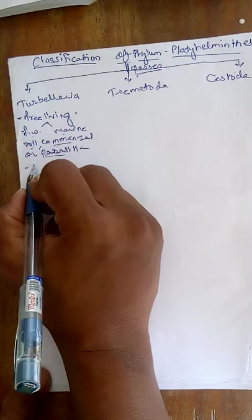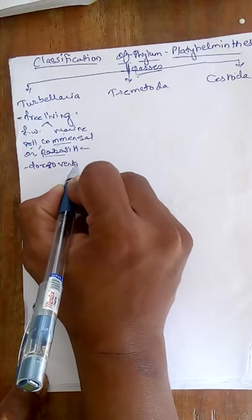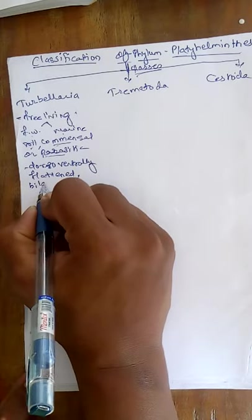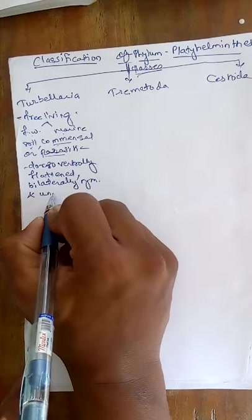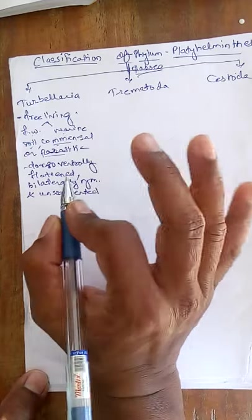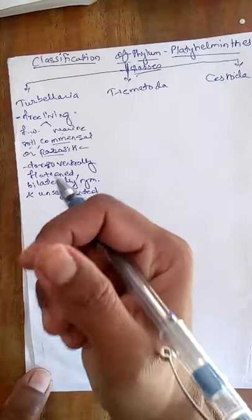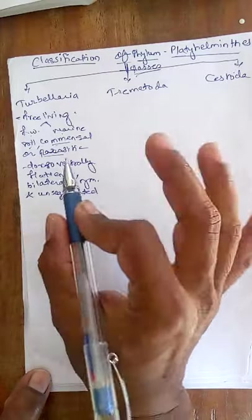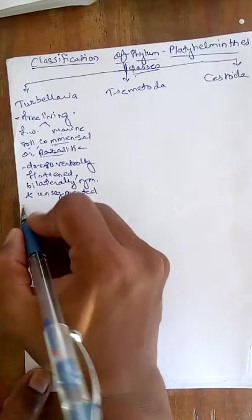The body of these animals is dorsoventrally flattened and bilaterally symmetrical, and it is unsegmented — meaning the body is not divided into segments. If we draw a line, we get two equal parts, which is known as bilateral symmetry.